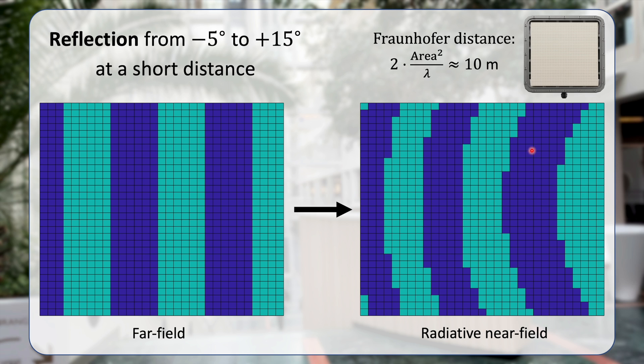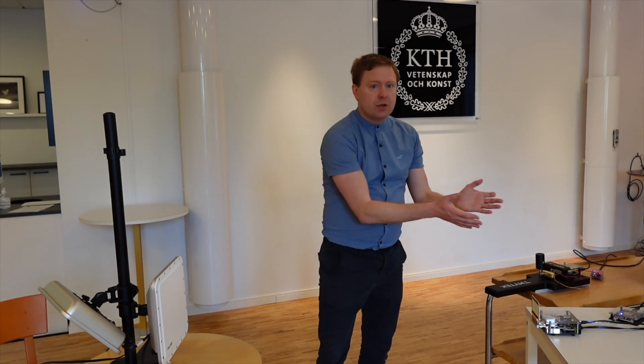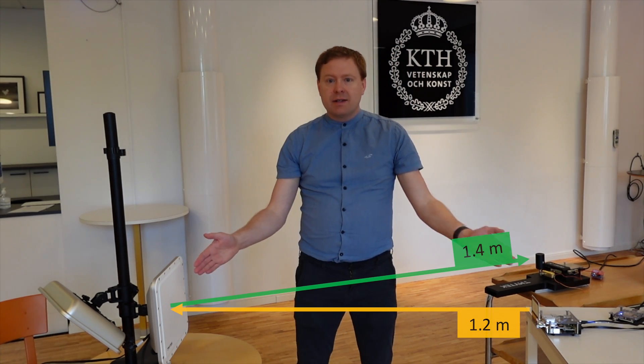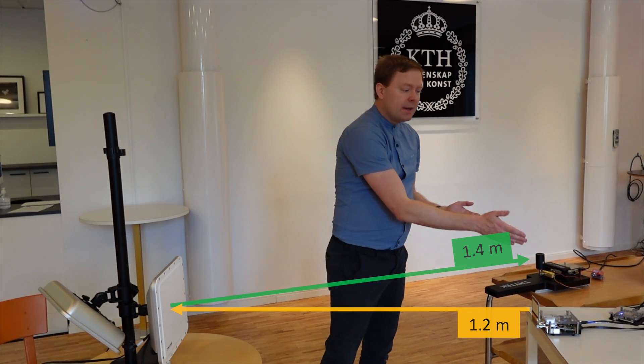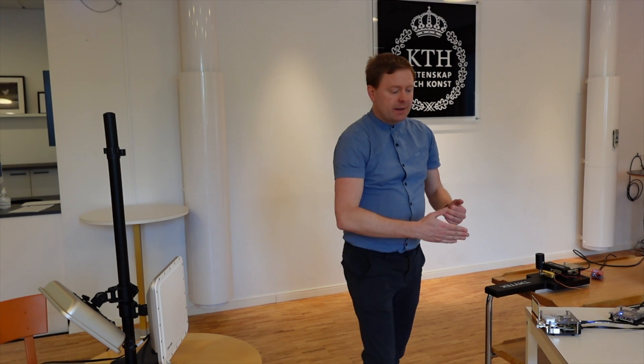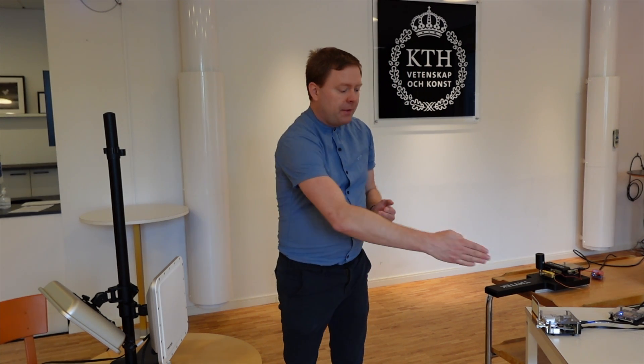This is our demo setup. We have a millimeter wave transmitter over here sending a signal towards an RIS which is reflecting it to a receiver over here. It is 1.2 meters between the transmitter and the RIS, 1.4 between the RIS and the receiver. We have made sure that the receiver is behind the transmitter so that the amount of signal that is leaked in between them is going to be negligible.